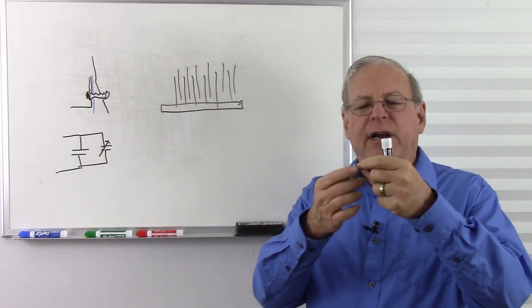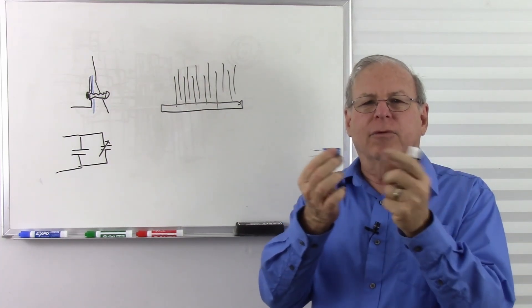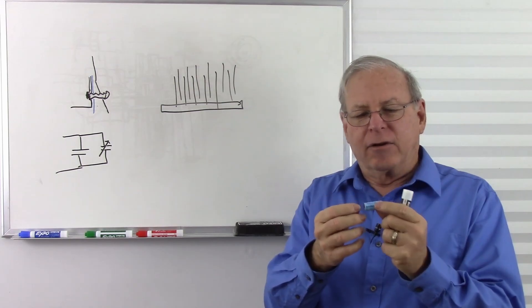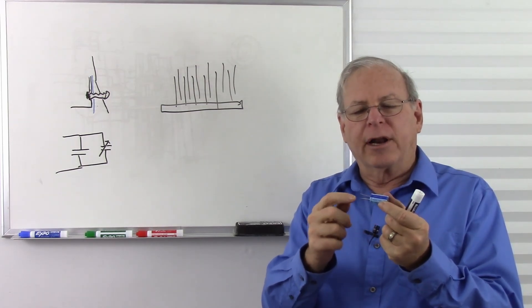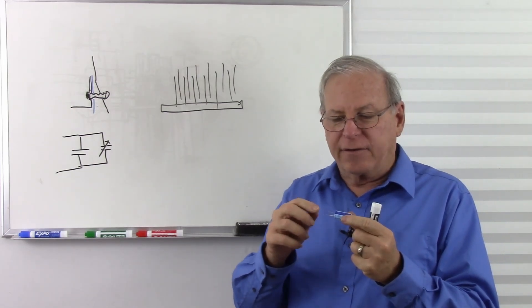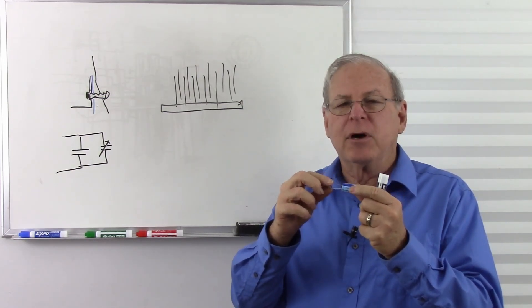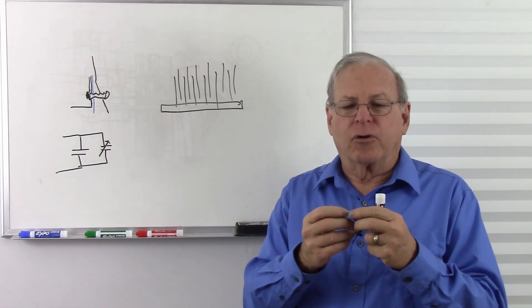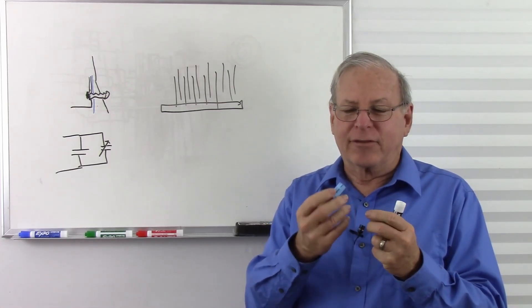Electrolytic capacitors may have radial leads like this one or axial leads where leads come out each end. And notice this one has the negative mark on it to show that this one is negative because electrolytic capacitors are polarized. You must have the polarity correct on them, or else they will short out. And if they short out, they often explode, so that's a bad thing.